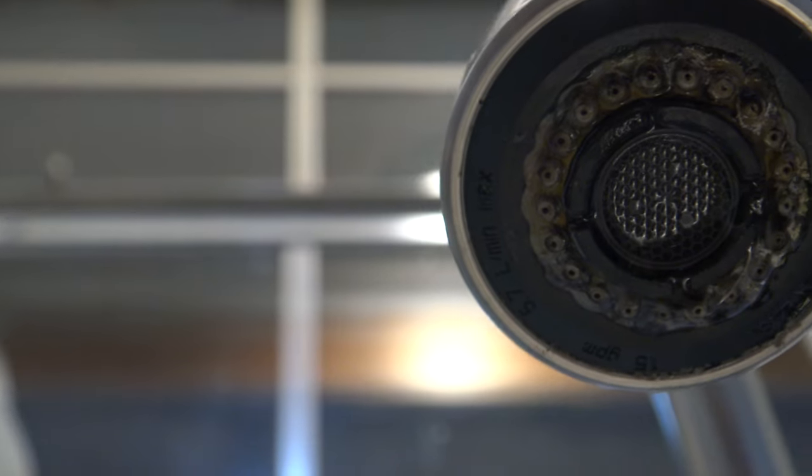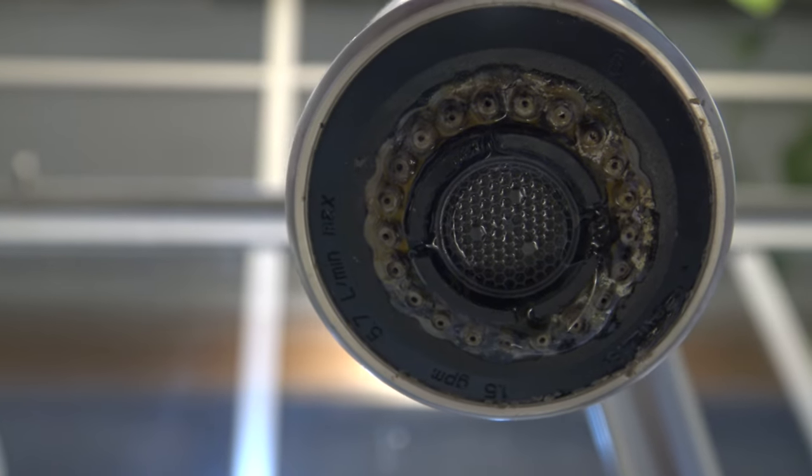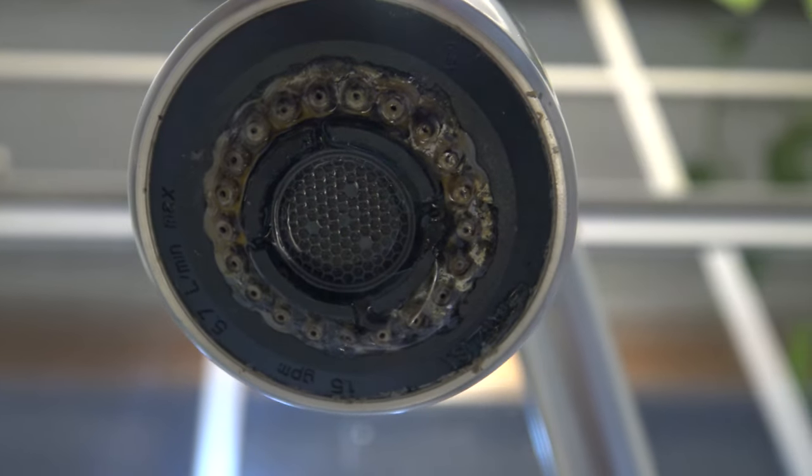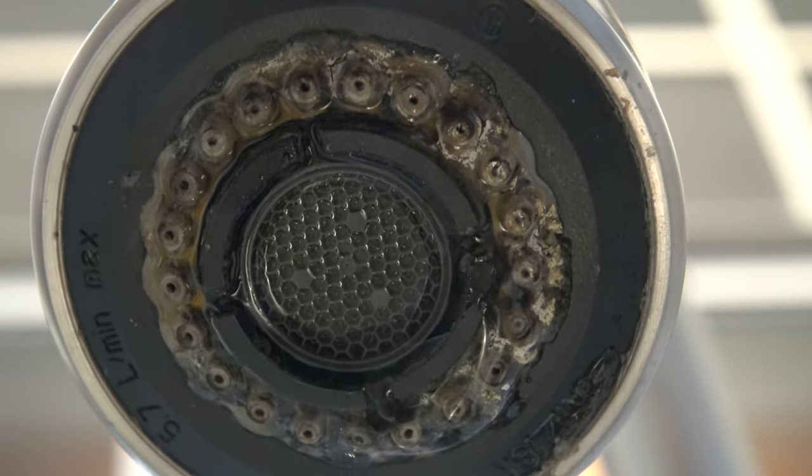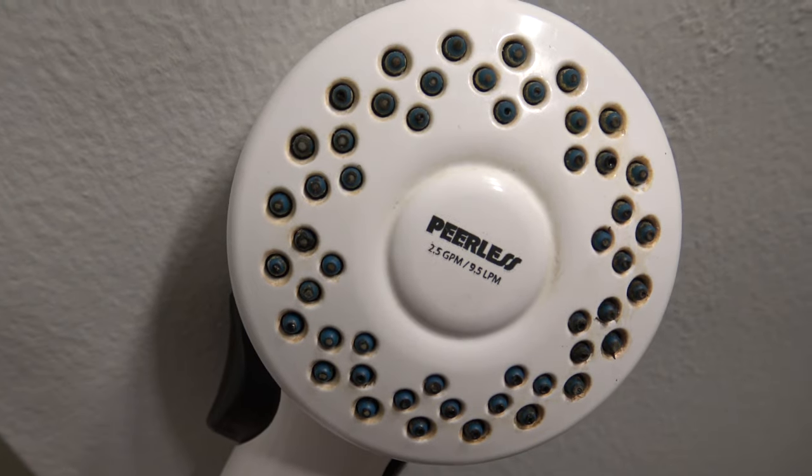Take a look underneath your faucet. Analyze the small holes. Do you see white buildup? This buildup is called limescale. It's also called mineral buildup, calcium buildup, or even calcification.